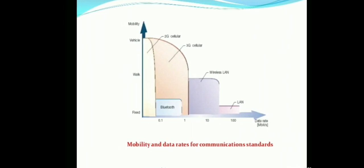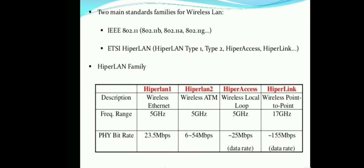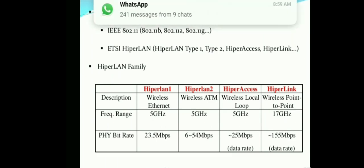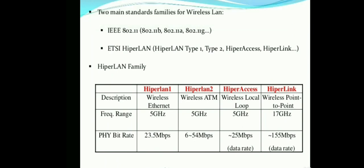The main standard families for wireless LAN are the IEEE 802.11 family — including 802.11b, 11a, 11g, etc. — and for the European region, ETSI HiperLAN. Under the HiperLAN family we have different types: HiperLAN 1, HiperLAN 2, HiperAccess, HiperLink, and others.